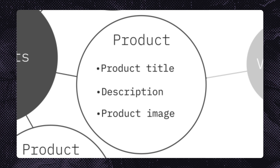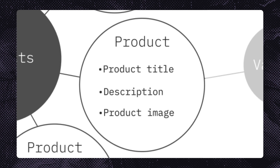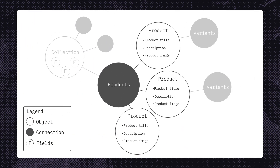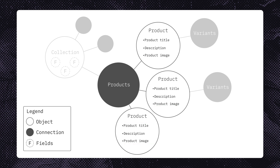Now let's say you're building a landing page on your online store for a new summer collection. You'll need to pull product titles, descriptions, and images for a whole list of products.